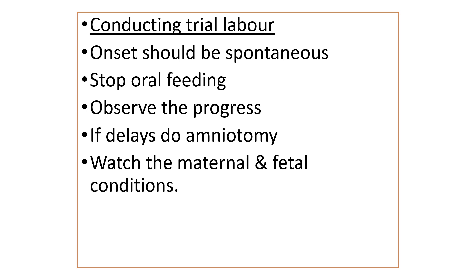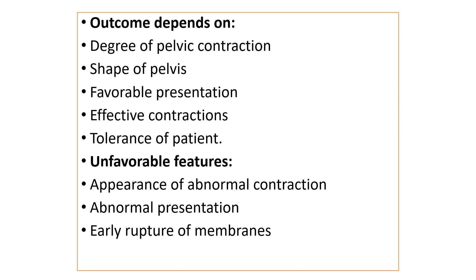When conducting trial labor, onset of labor should be spontaneous. Once the labor process has started, do not give oral feeds to the mother because at any time, if normal progress of labor is not occurring, you may need to proceed to operative delivery. Keep the mother nil orally and observe for the progress of labor. If there is a delay, you can perform amniotomy. Watch maternal and fetal condition — uterine contractions, dilatation of cervix, maternal pulse, BP, and mainly the fetal heart rate. The outcome depends on the degree of pelvic contraction, shape of the pelvis, presentation of the baby, effectiveness of uterine contractions, and tolerance of the patient.